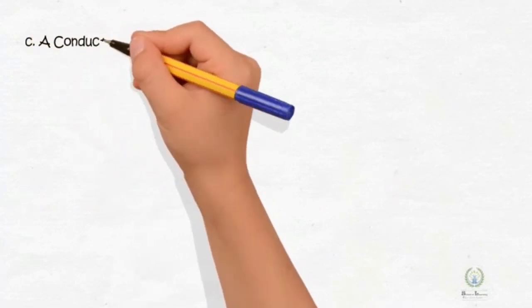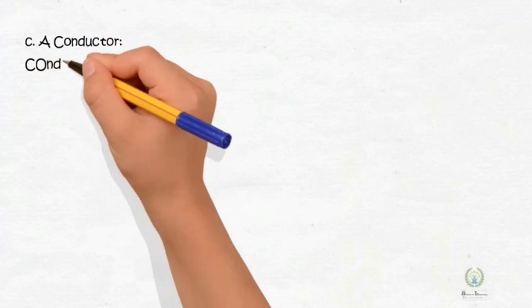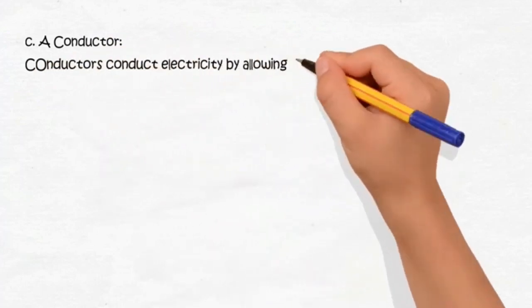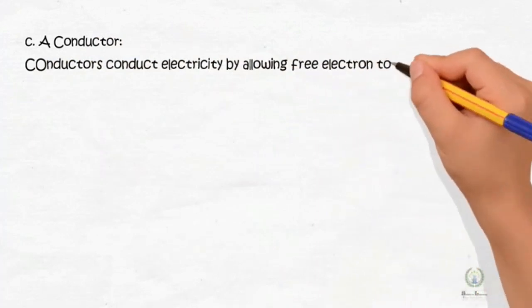C: a conductor. Conductor conducts electricity by allowing free electrons to flow through them.